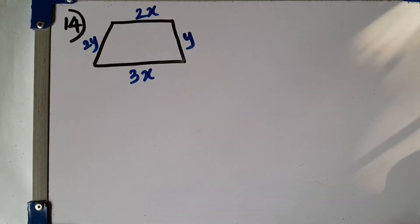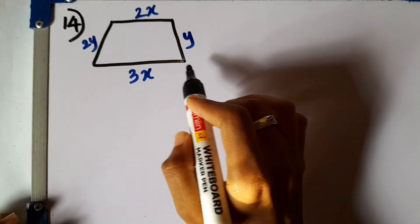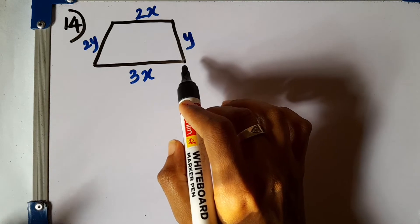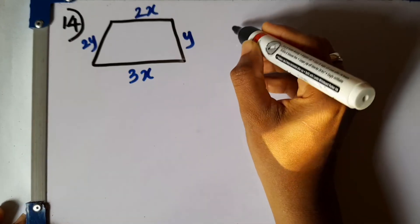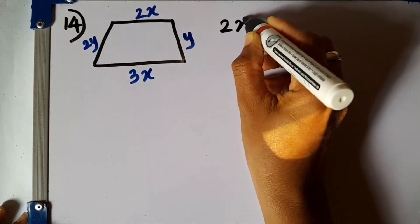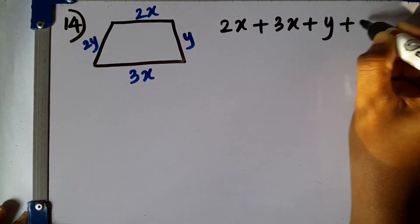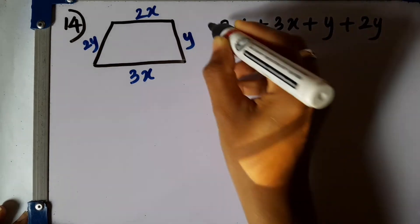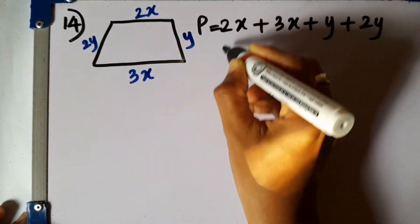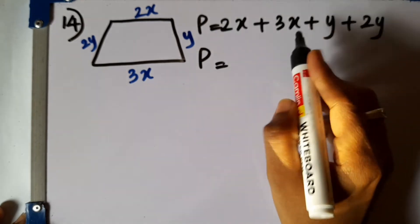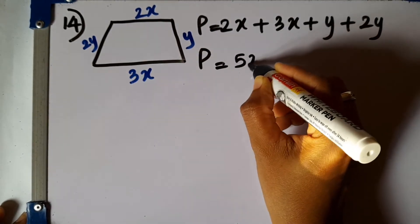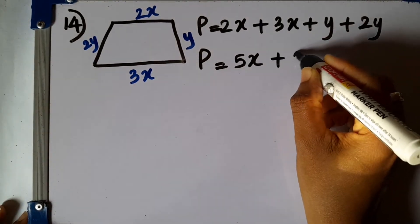Question number 14. Write down an algebraic expression for the perimeter of the given figure. Perimeter means the sum of the surrounding lengths. So we can write 2x plus 3x plus y plus 2y. This equals the perimeter P. Then P equals 2x plus 3x, which is 5x, plus 3y. So P equals 5x plus 3y.